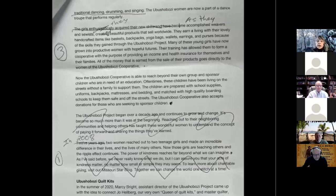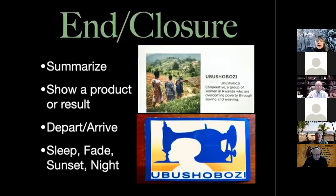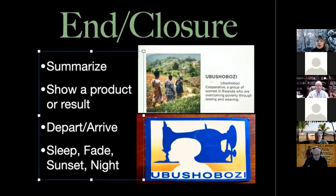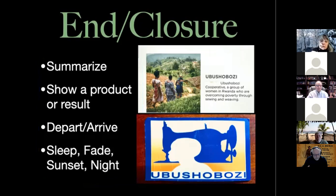The end or closure of your story should summarize what you've been telling, show a product or result, or show an arrival or departure — these are all ways to show you're done. In my case, I have an encapsulating slide at the end showing the women in Rwanda with text explaining that this is a cooperative group of women overcoming poverty through sewing and weaving, plus a picture of the businesswomen with the name Ubu Shiboshi. I'll also have narration at the end with the words 'Your kindness can make a difference,' because that's the whole point of this story.